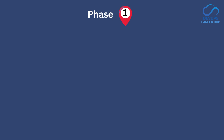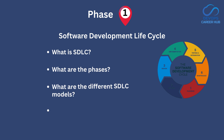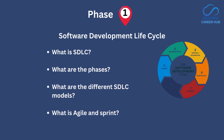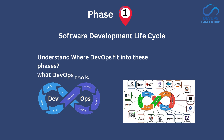The first thing to learn in phase 1 is about the software development lifecycle — what it is, what are the phases, what are the different SDLC models, what is Agile and what is Scrum, etc. The main goal of this is to understand where DevOps fits into these phases and what DevOps tools are used in each phase.